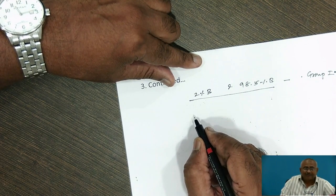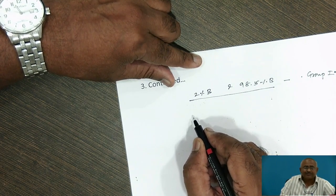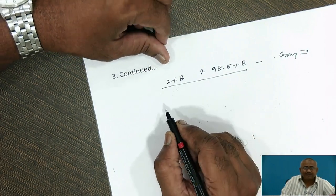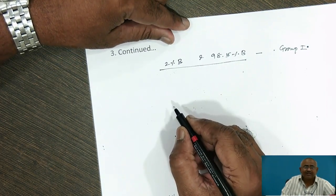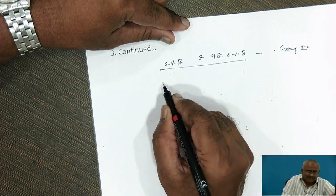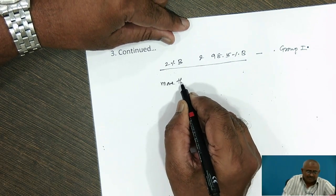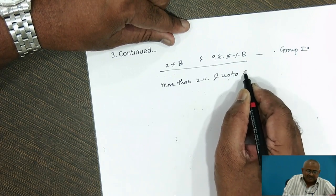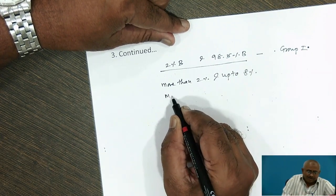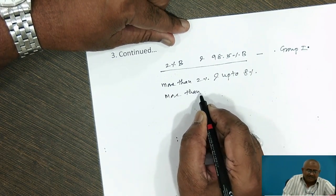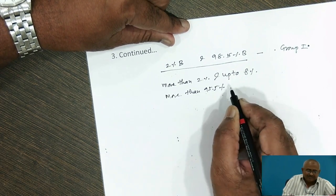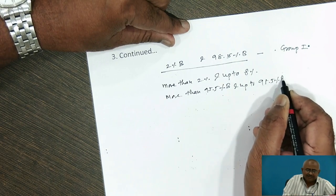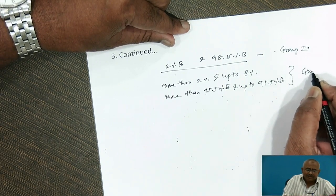Another group of alloys is alloys which solidify as solid solution but are unable to retain solid solution structure at room temperature. These are the alloys containing more than 2% B and up to 8% B and more than 95.5% B and up to 98.5% B. These are group 2 alloys.